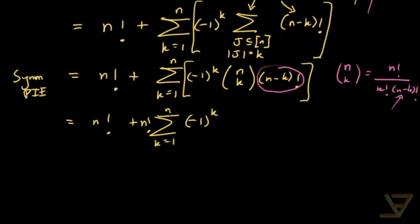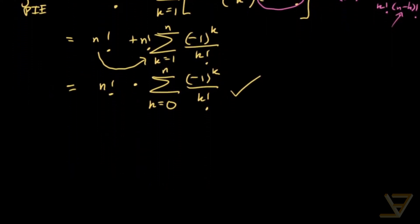And now we can just absorb this outer term into the sum. So we get n factorial times k equals 0 now, because we absorb the first term in, with the sum being negative 1 to the k over k factorial. So this is the number of derangements where the domain is the first n positive integers.